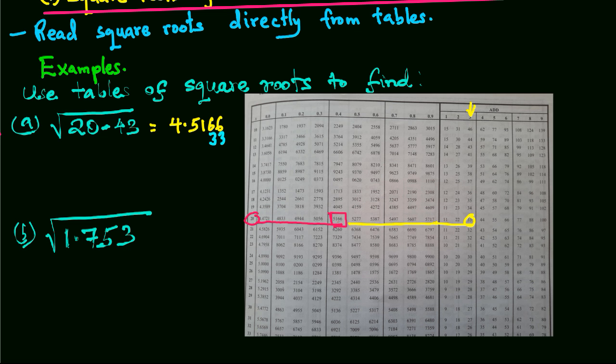The result will be 4.5196. In a similar way, we can get the square root of 1.753 directly from the tables.